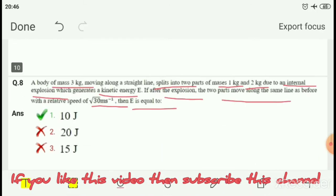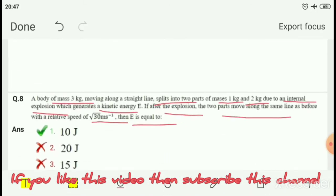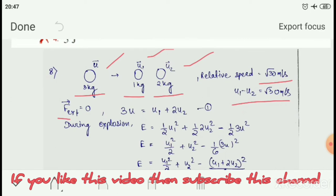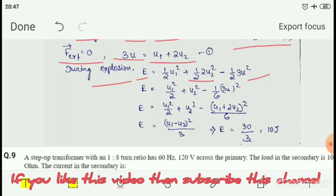Since it's an internal explosion, F external equals zero. Using conservation of momentum: 3u equals u1 plus 2u2. The kinetic energy during explosion E equals half u1 squared plus half times 2 u2 squared minus half times 3 u squared. Solving, we get E equals u1 squared plus u2 squared minus 3u squared, which can be rewritten as 3u squared equals the whole square of 3u divided by 6.